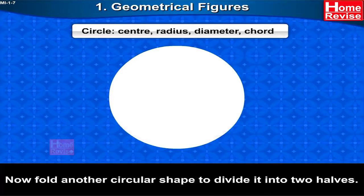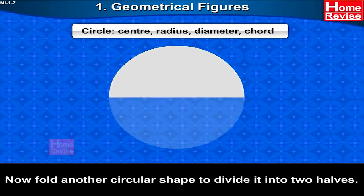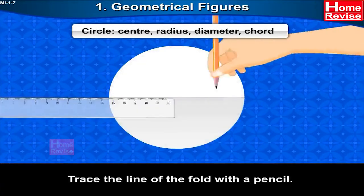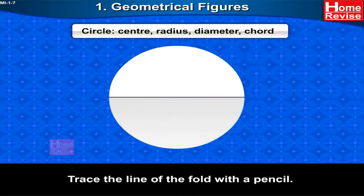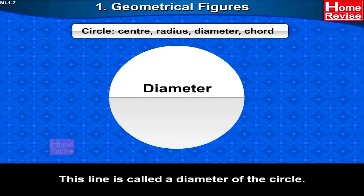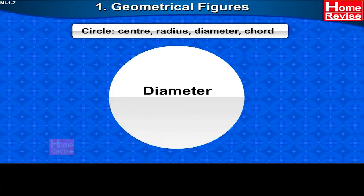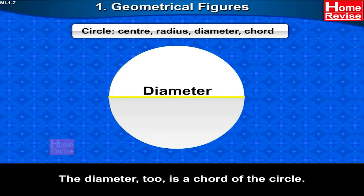Now fold another circular shape to divide it into two halves, and trace the line of the fold with a pencil. This line is called a diameter of the circle. The diameter is also a chord of the circle.